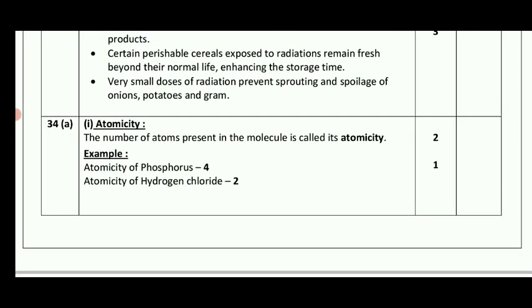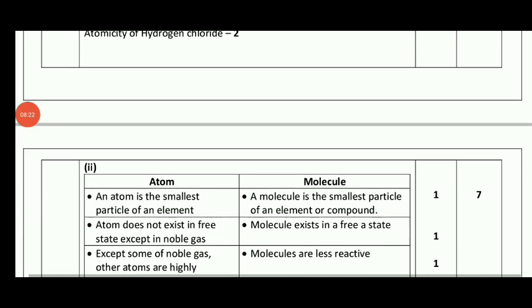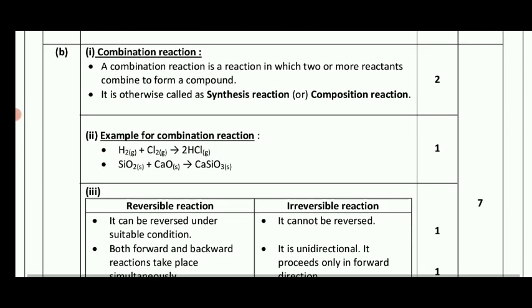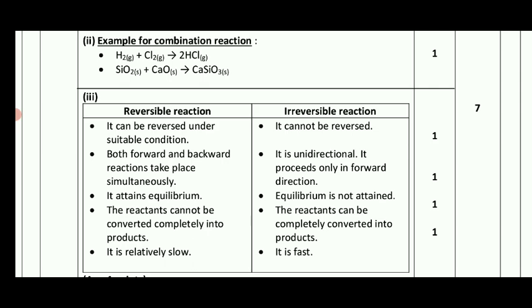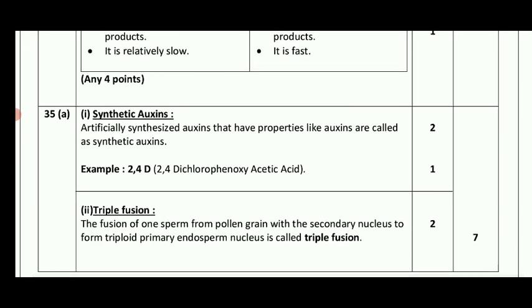The number of atoms present in a molecule is called atomicity. The next points are: irreversible reaction versus reversible reaction. A synthetic auxin — artificially produced oxygen-like compound with properties like auxin — is called a synthetic auxin. Example: 2,4-D (2,4-Dichlorophenoxyacetic acid).